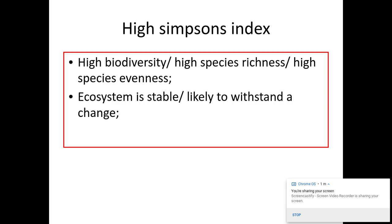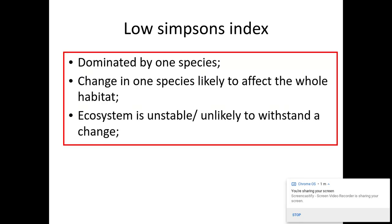So if you think if this is what it means, if there's a high number, a high Simpson's index of diversity, if there is a low Simpson's index, this means the change in one species is likely to affect the whole habitat, that the ecosystem is unstable and unlikely to withstand a change. It can also mean that it's dominated by one species.